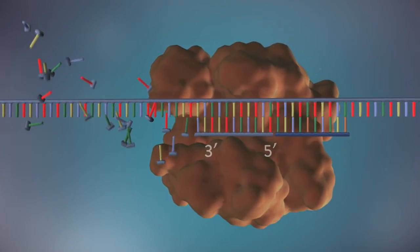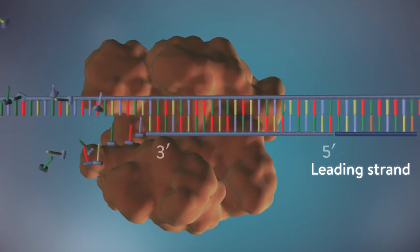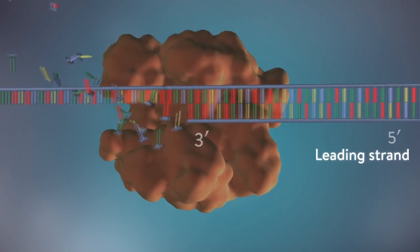One of the new strands of DNA, the leading strand, is made continuously, the DNA polymerase adding bases one by one in the 5' to 3' direction.